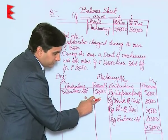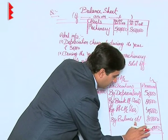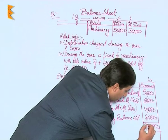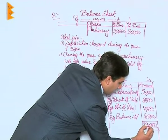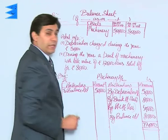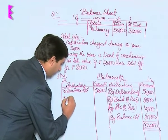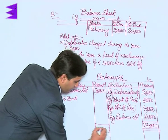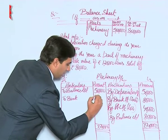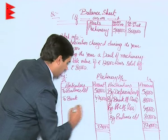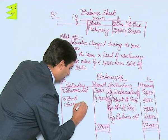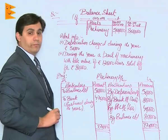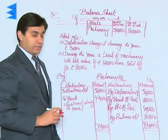The closing balance is rupees 8 lakh, so the total on the credit side is rupees 9 lakh 70,000 — students, please correct that figure to 9 lakh 70,000. Out of 9 lakh 70,000, we will deduct the opening balance of 5 lakh, and we will get the balancing figure — 'to bank' — which represents the purchase of assets during the year. So 9 lakh 70,000 minus 5 lakh gives us rupees 4 lakh 70,000, representing purchases during the year.